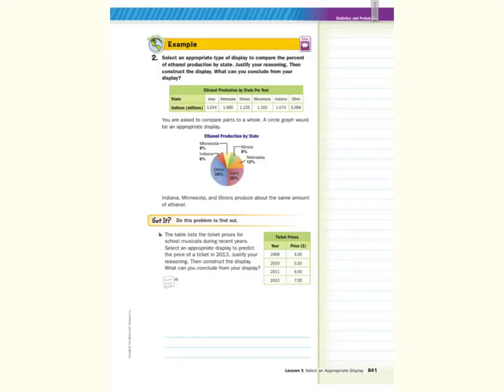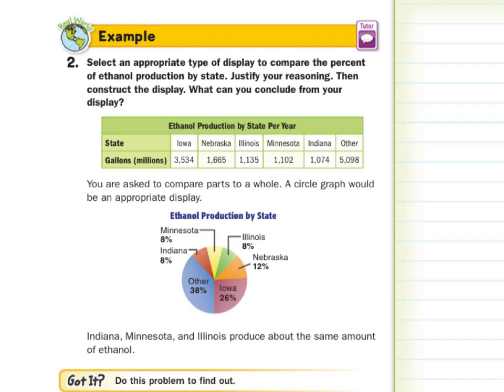In our second guided example, select an appropriate type of display to compare the percent of ethanol production by state. Justify your reasoning, then construct the display. What can you conclude from your display? Well, we have ethanol production by state per year, Iowa, Nebraska, Illinois, Minnesota, Indiana, and other. And you can see the millions of gallons of ethanol that's produced by state per year. And we're asked to compare the percent. Well, that again is parts to a whole, which means a circle graph. And you can see the circle graph that they drew in.